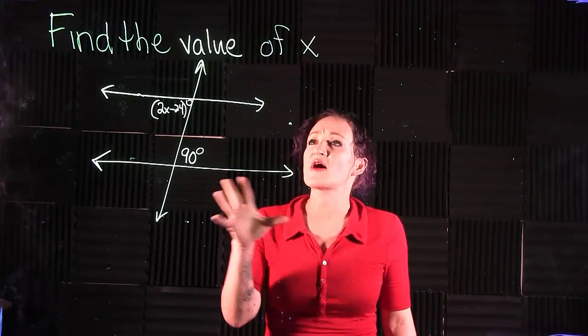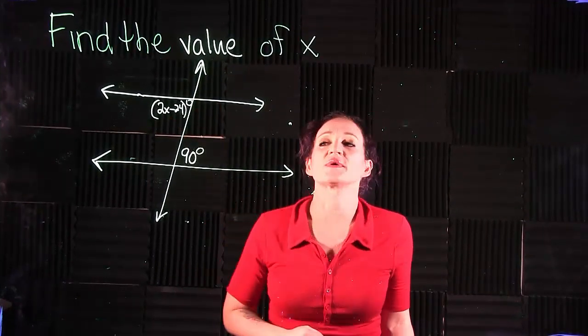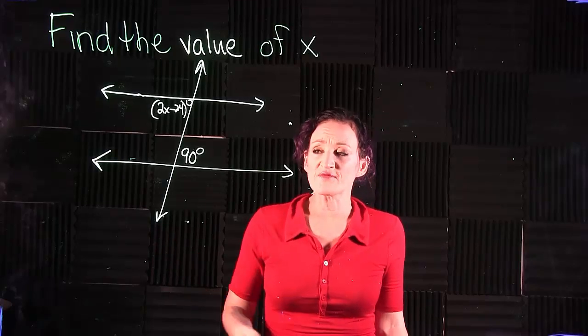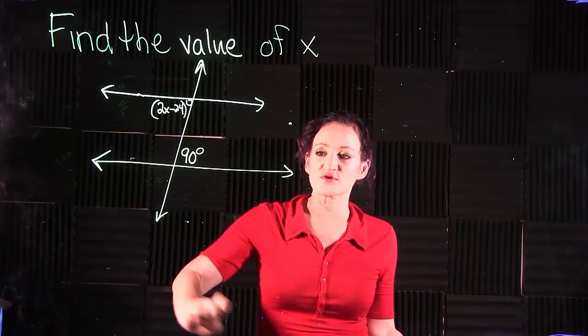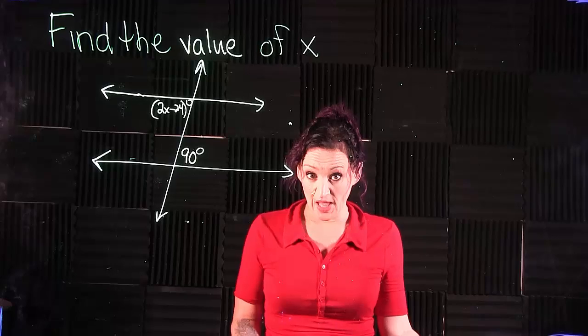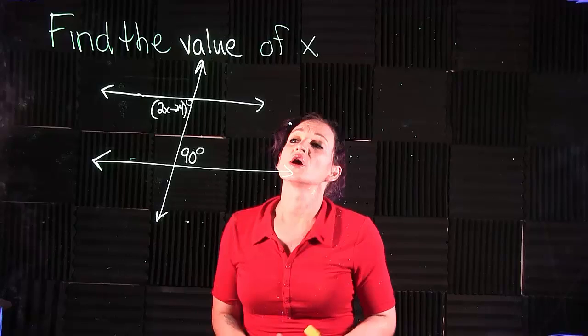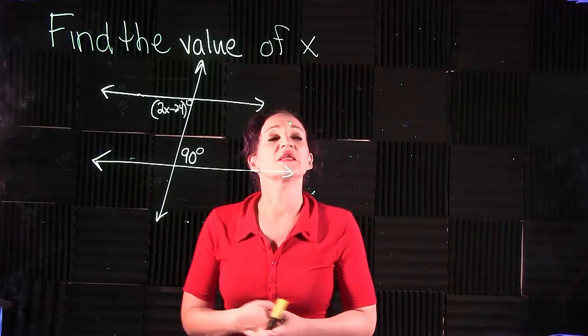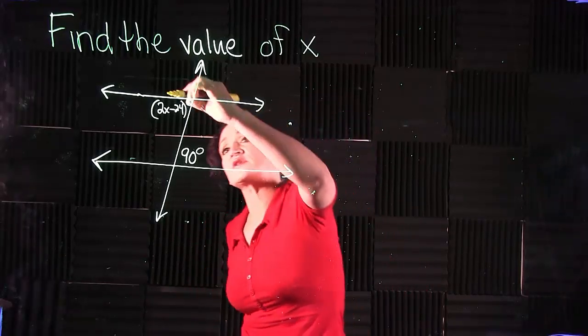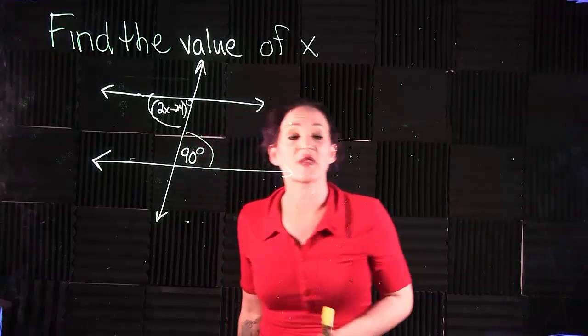For this video, we will be finding the value of x in the following scenario. We have a transversal cutting through two parallel lines. This forms some angle relationships. When we look at this image, we're trying to find the value of x, and we see that we have an angle here and an angle here.